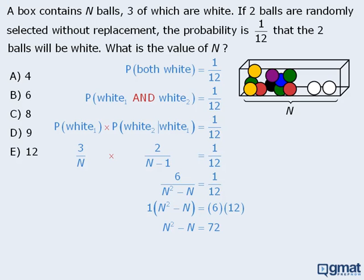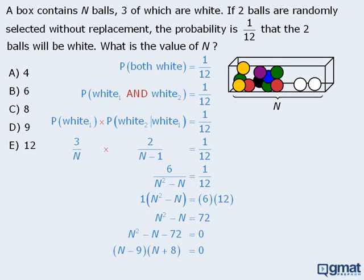Since this is a quadratic equation, we'll set it equal to zero, and then we'll factor the left-hand side to get the following. Now, if N minus 9 times N plus 8 is equal to zero, then N must equal 9 or negative 8.